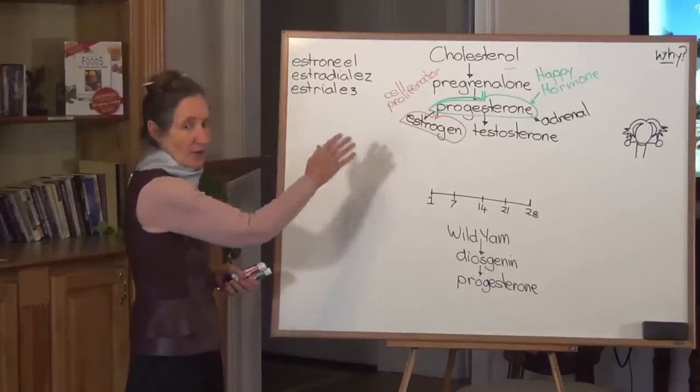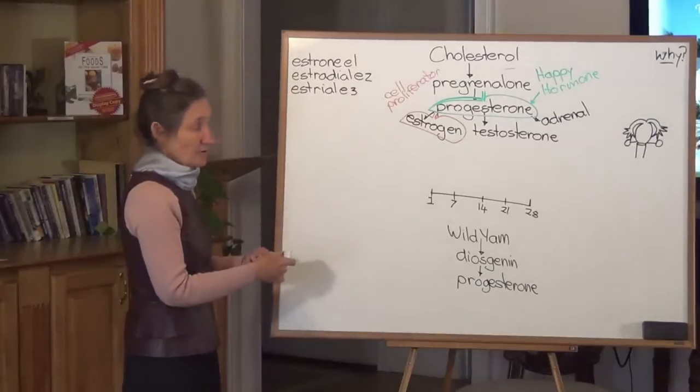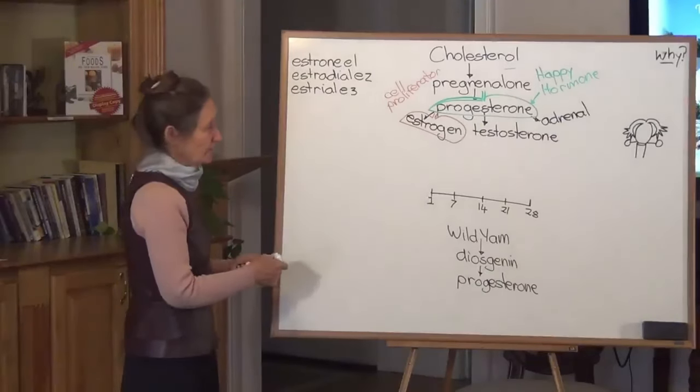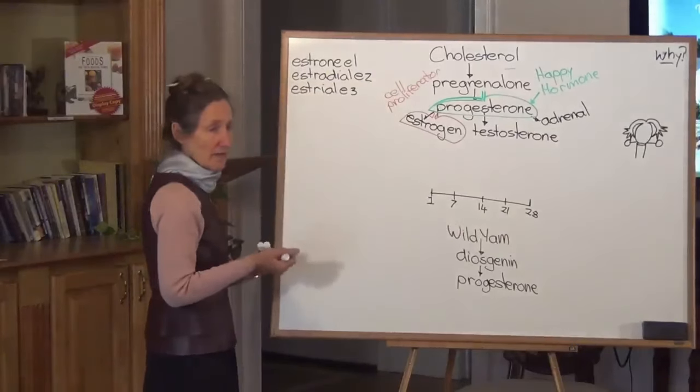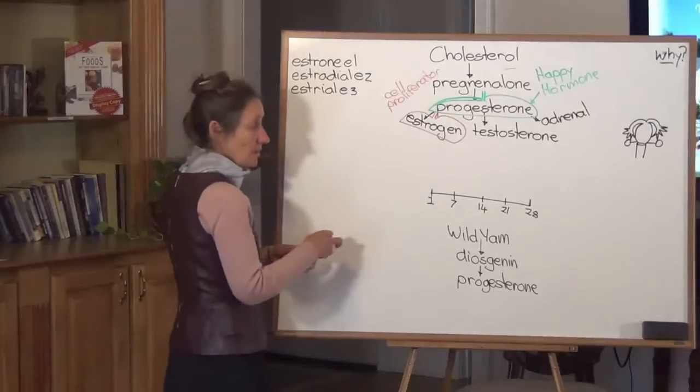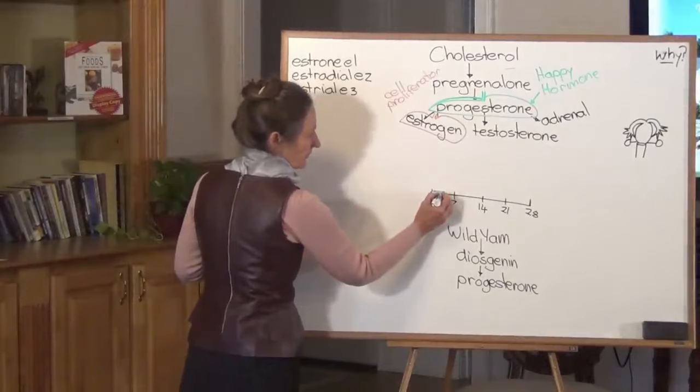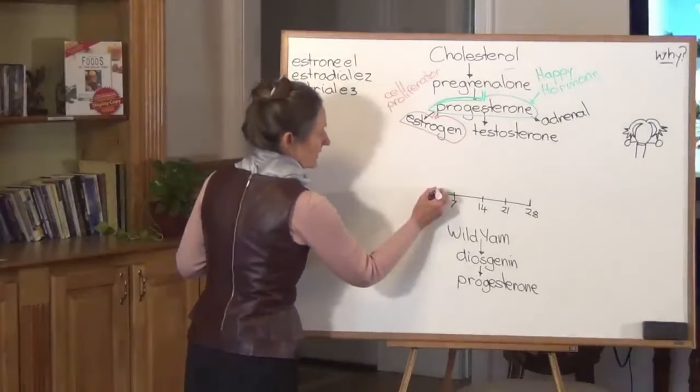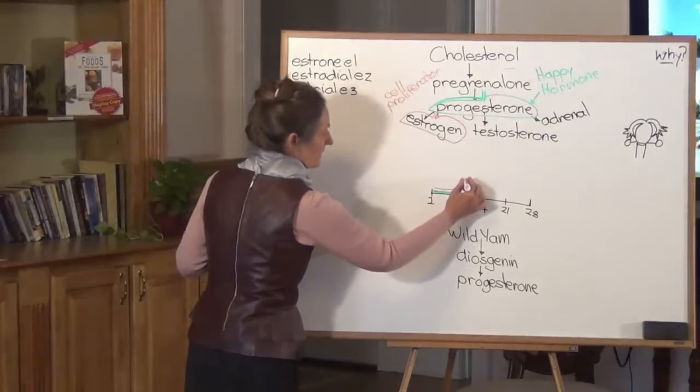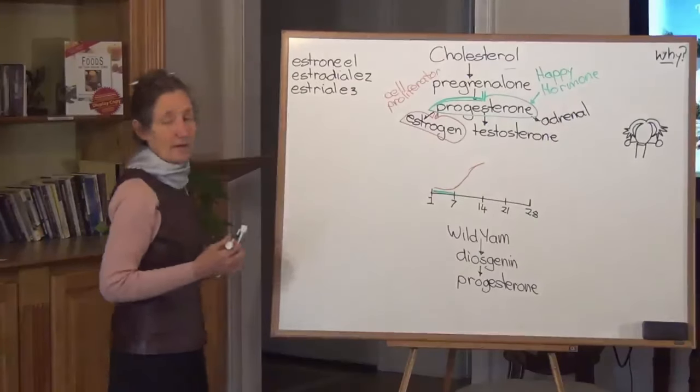So estrogen isn't bad. It's only when it's out of control. As you will see in this presentation. So let's look at the monthly cycle. It's a 28 day cycle. And day one is the day a woman begins to menstruate. Day one of the monthly cycle her progesterone levels are low. Day one of the monthly cycle estrogen levels are also low. But by day seven they're starting to rise up until day 11. They're quite high.